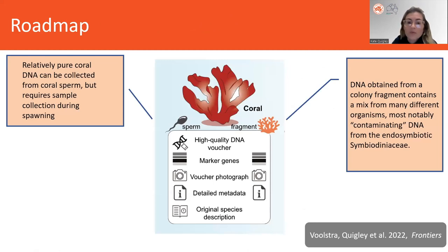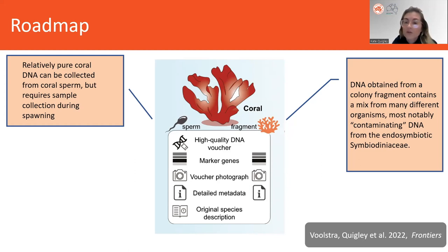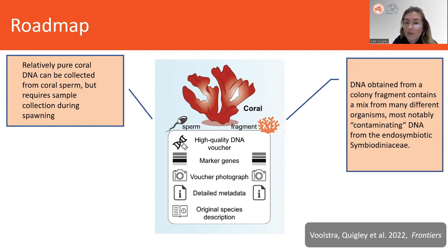Within that paper we really tried to outline a roadmap for how people could start thinking about collecting samples for reference genomes in an organism like a holobiont. A holobiont is a composition of different organisms, including the coral host. For this talk I'll be restricted to the coral host. Coral sperm is a very good place to get genomic material for reference genomes because it's relatively pure coral DNA.